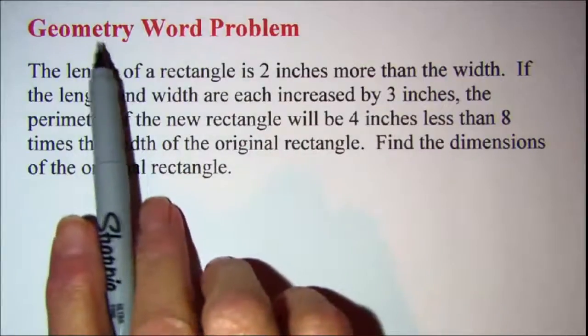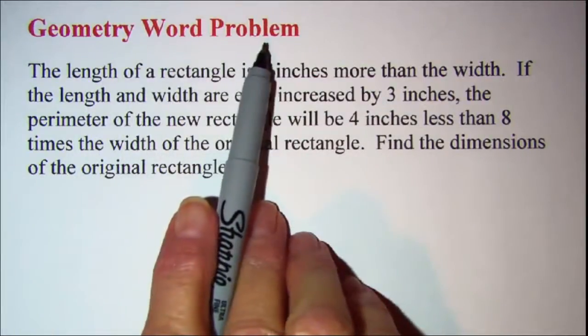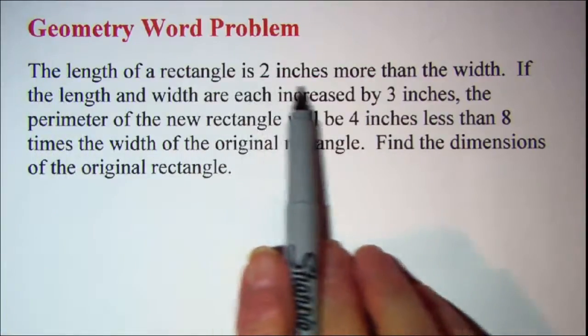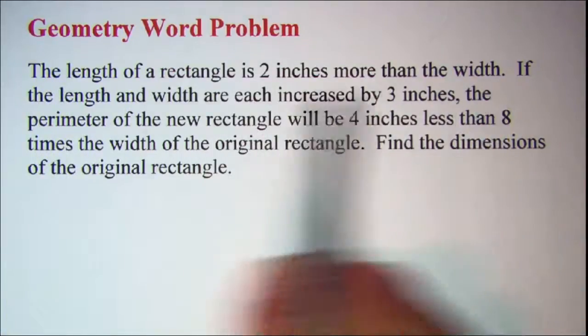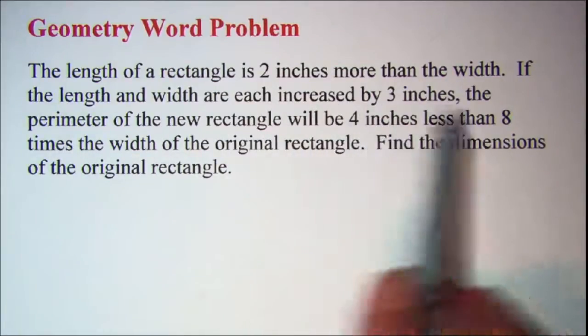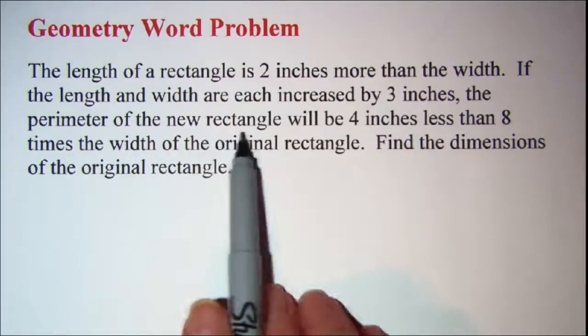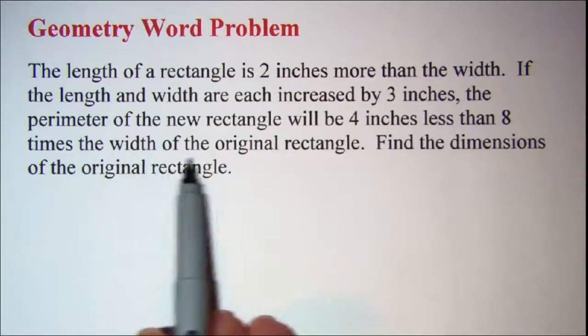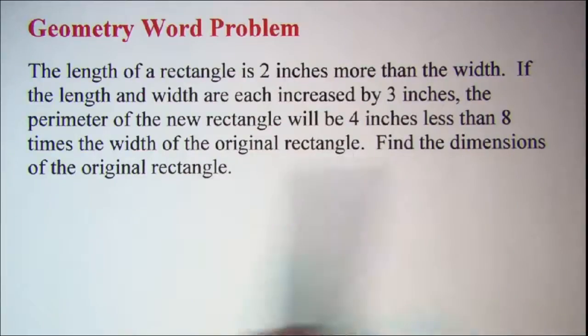In this video we'll be doing a geometry word problem. The problem is: the length of a rectangle is 2 inches more than the width. If the length and the width are each increased by 3 inches, the perimeter of the new rectangle will be 4 inches less than 8 times the width of the original rectangle. Find the dimensions of the original rectangle.